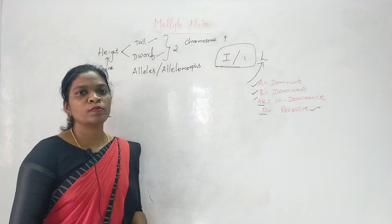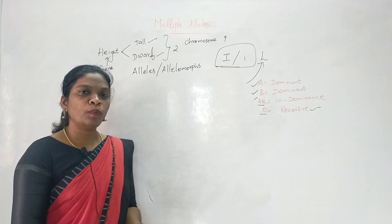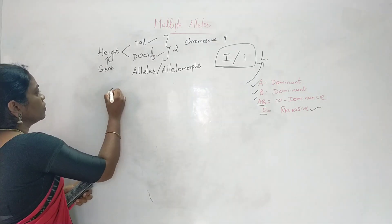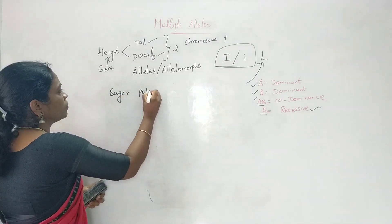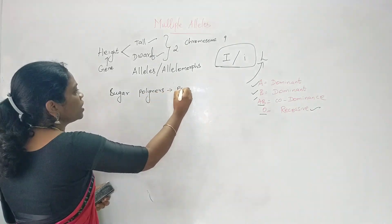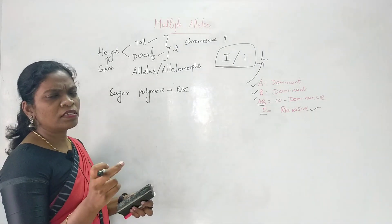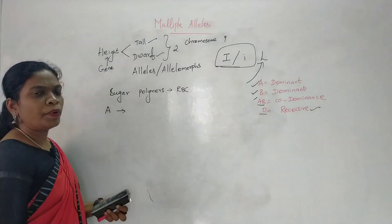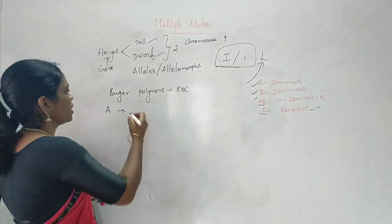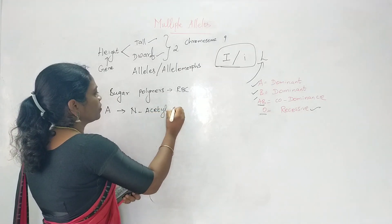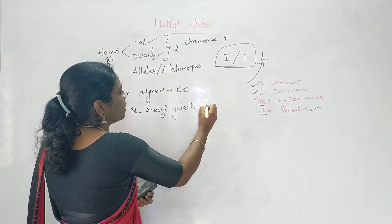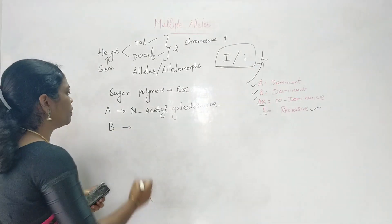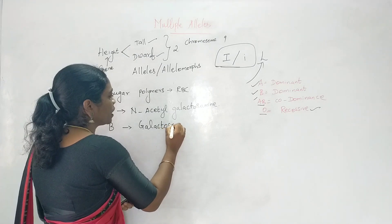There are sugar polymers present on the surface of red blood cells (RBCs). A group of enzymes known as transferase enzymes are secreted by individuals of different blood groups. These sugar polymers on the RBC surface are unique and different in each of the four blood groups. Blood group A produces an enzyme known as N-acetyl galactosamine transferase, and blood group B produces galactose transferase enzyme.